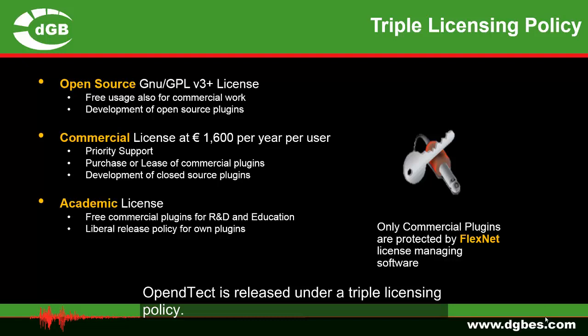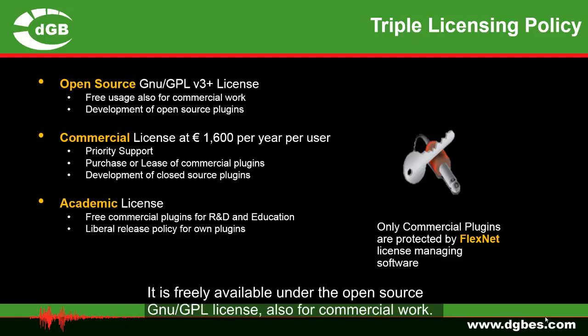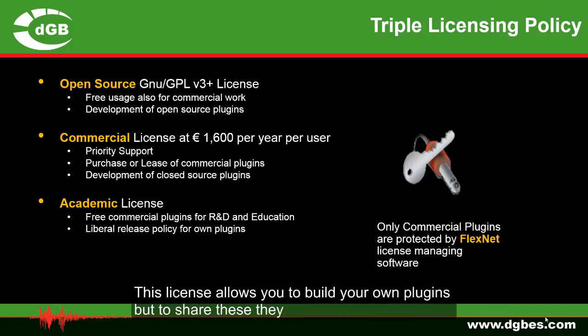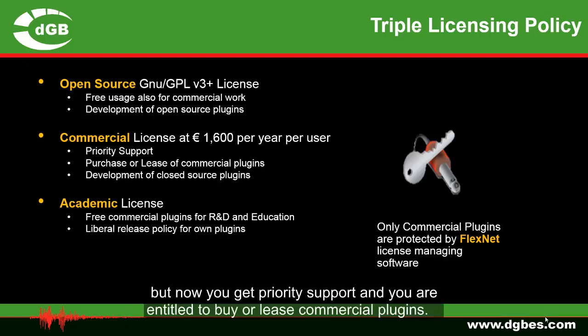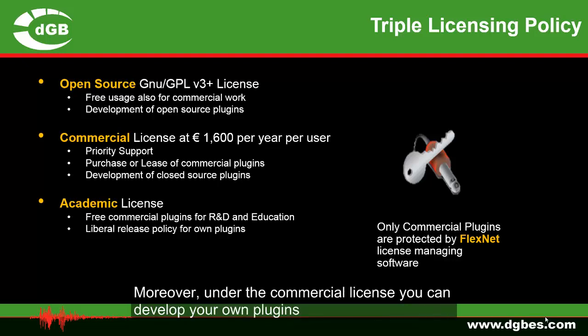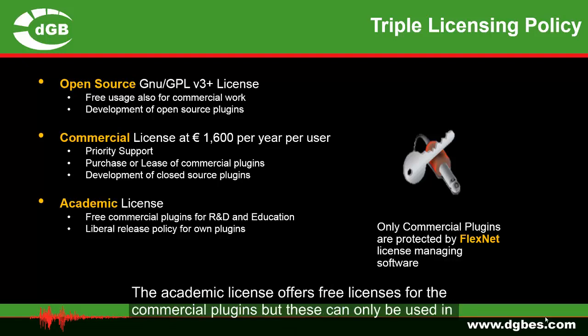OpenDetect is released under a triple licensing policy. It is freely available under the open source GNU GPL license, also for commercial work. This license allows you to build your own plugins, but to share these, they have to be released as open source products. The commercial license gives you access to exactly the same OpenDetect software, but with priority support, and you are entitled to buy or lease commercial plugins. Under the commercial license you can develop your own plugins and release these as commercial plugins without releasing the source code.